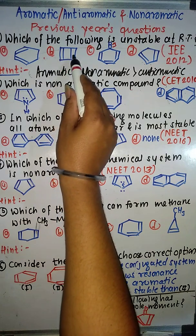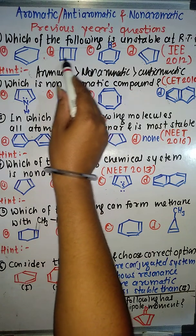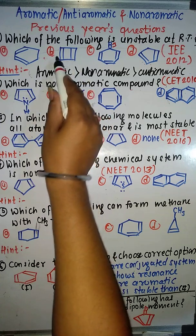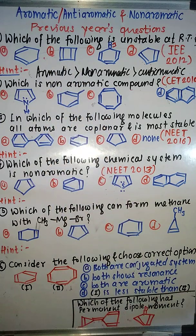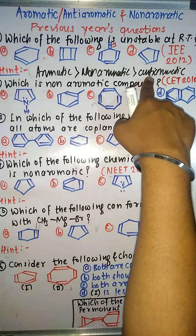The second option is cyclic, planar, conjugated, but it has an even number of pi bonds. Even number of pi bonds means it is anti-aromatic.